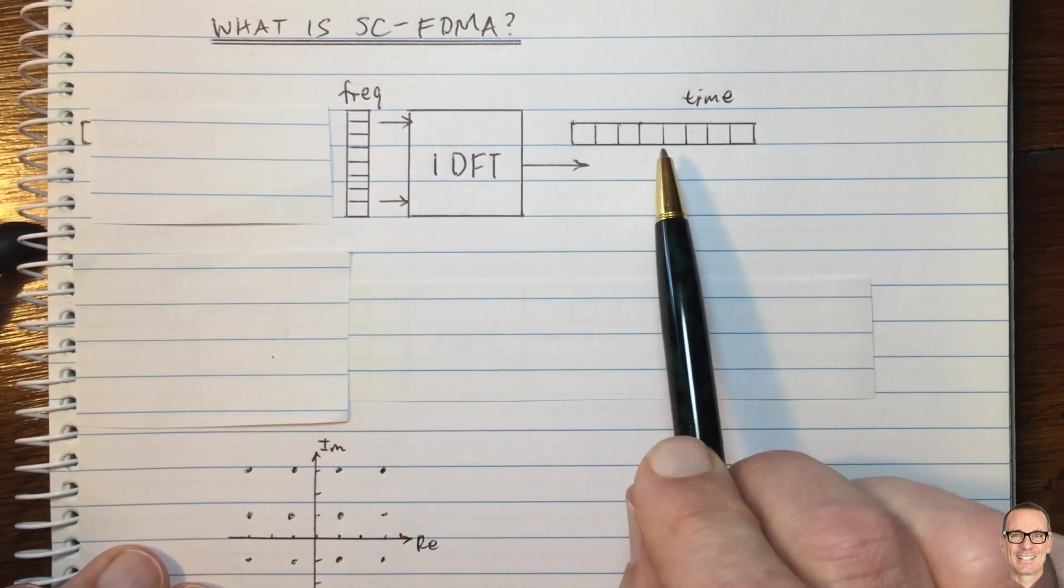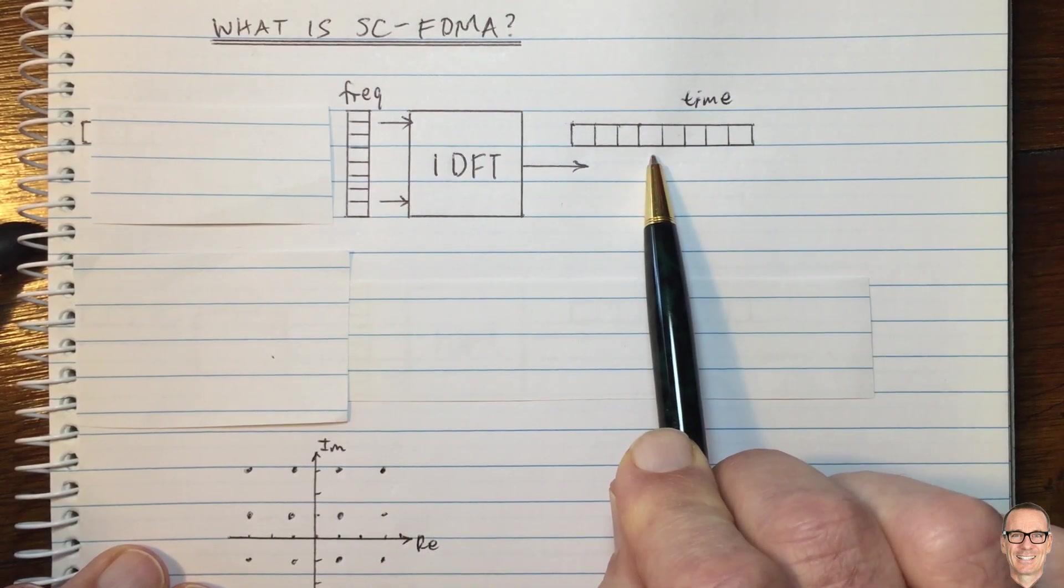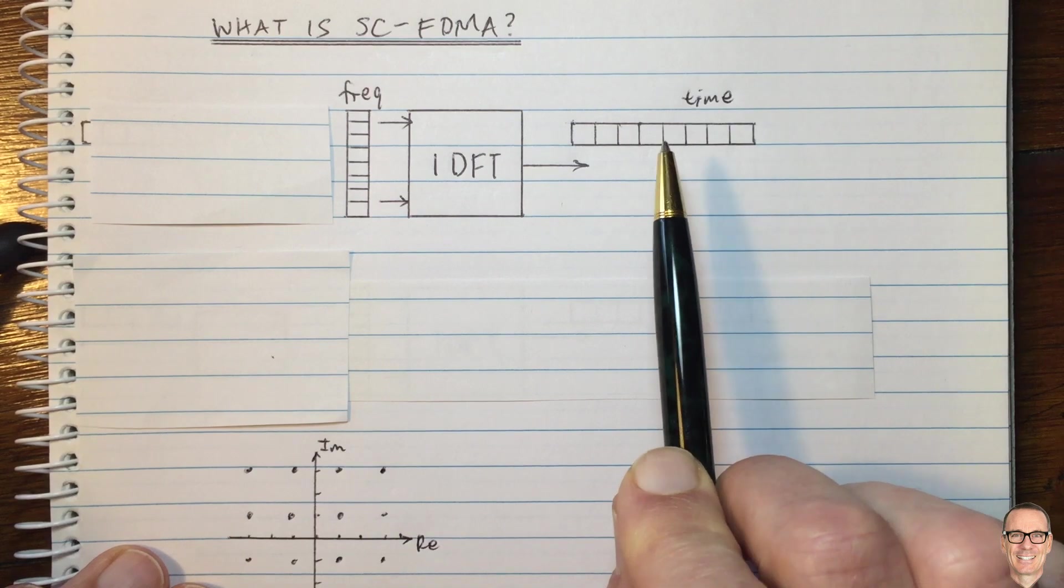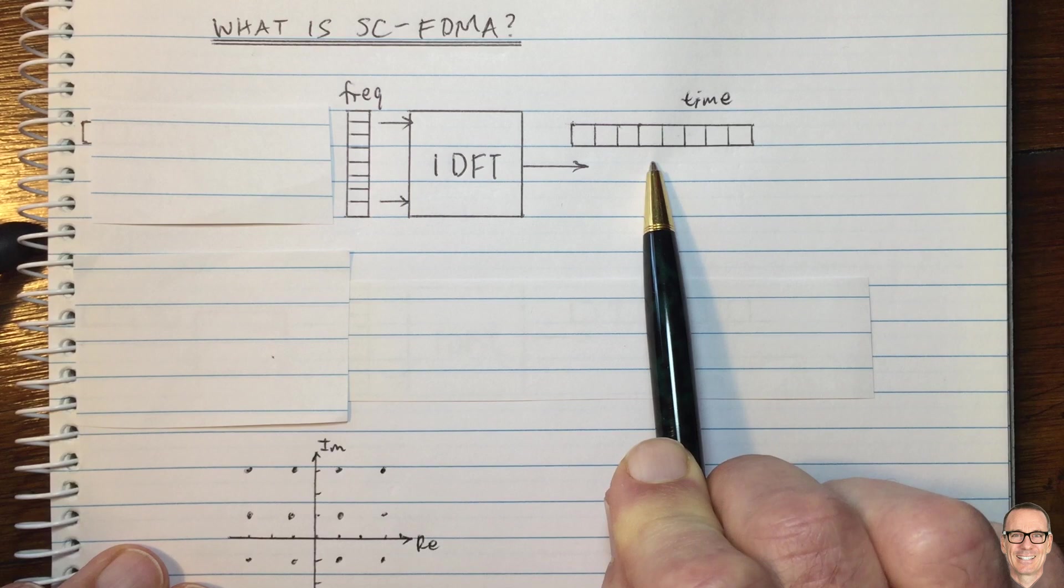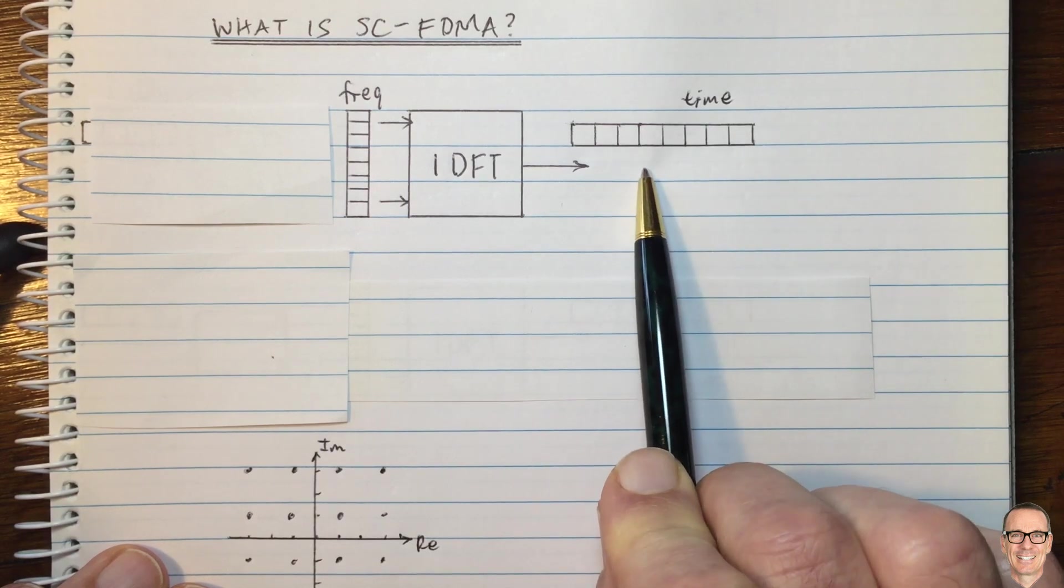All of these techniques require extra power and complexity in the transmitter. So they're fine on the downlink because your base station has lots of power and can do complex operations. But on the uplink, this can be a problem.